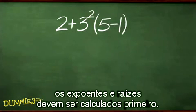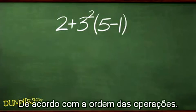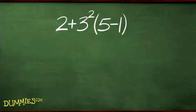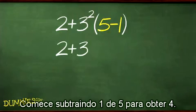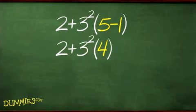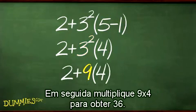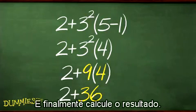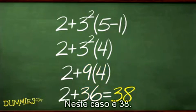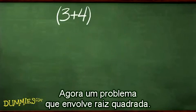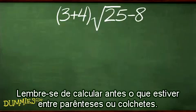Although any operations in parentheses or brackets take precedence, exponents and roots should be solved first according to the order of operations. Now let's work out a problem with exponents. First, subtract 1 from 5 to get 4. Second, raise 3 to the second power to get 9. Third, multiply 9 and 4 to get 36, and finally calculate the answer — in this case, 38.